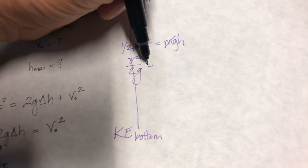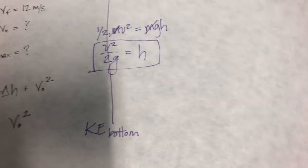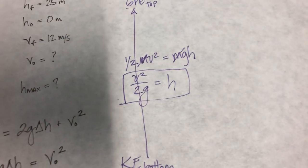So v squared over 2, divide both sides by g, equals h maximum height. So that's conservation of energy coming in handy already.